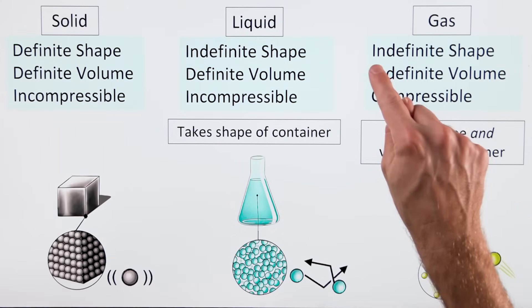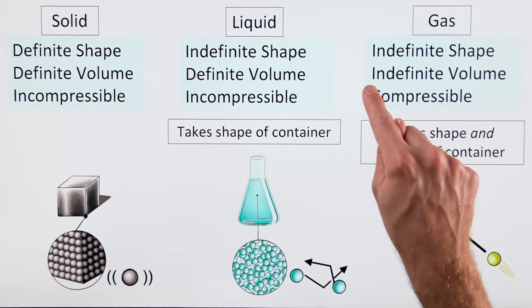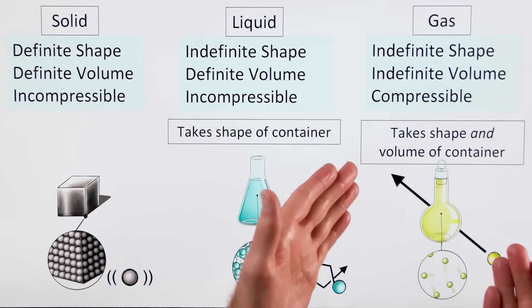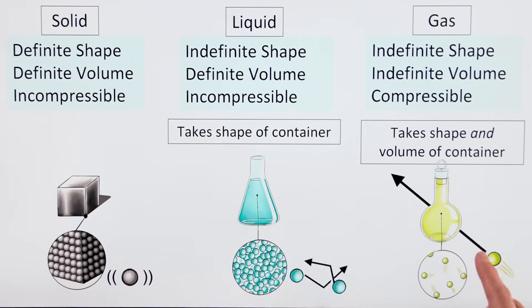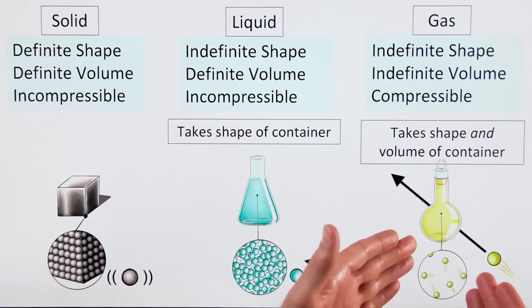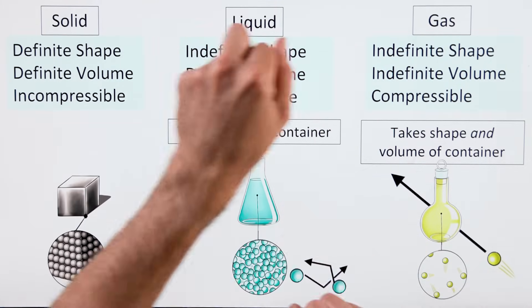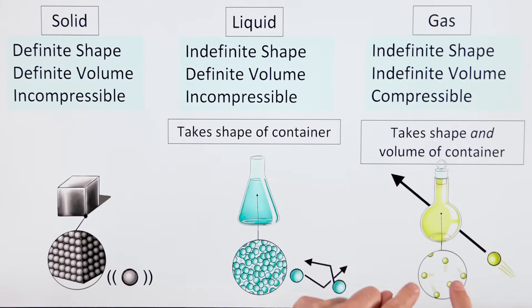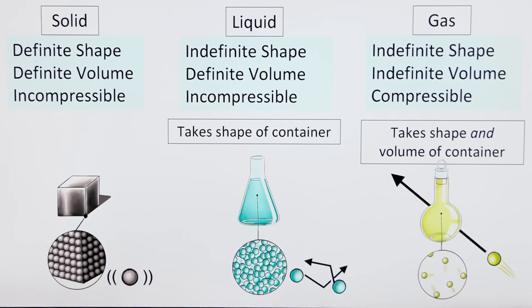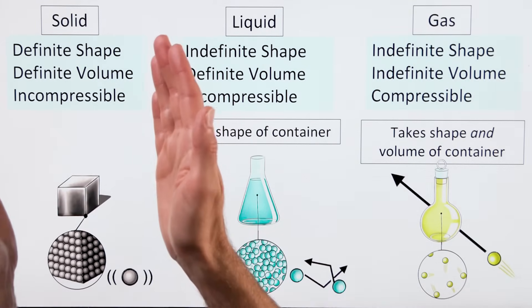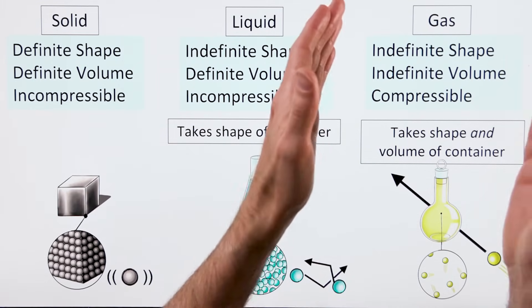Finally, gases have no definite shape and no definite volume. They take the shape and the volume of their container. The particles in gas are very far apart and they're flying around really quickly. Because there's a lot of space between the particles, gases are easy to compress. That's an introduction to the three main phases of matter.